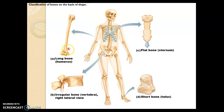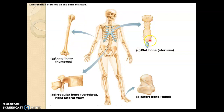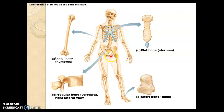Here we can see an example of a long bone — it's longer than it is wide, with an epiphysis and a diaphysis, meaning bulged at the ends and a narrower shaft. Here's an example of a flat bone; skull bones or cranial bones are also flat bones. Short bones are bones of the ankle and the wrist, which are carpals. And here are examples of irregular bones: a vertebra and pelvic bones.